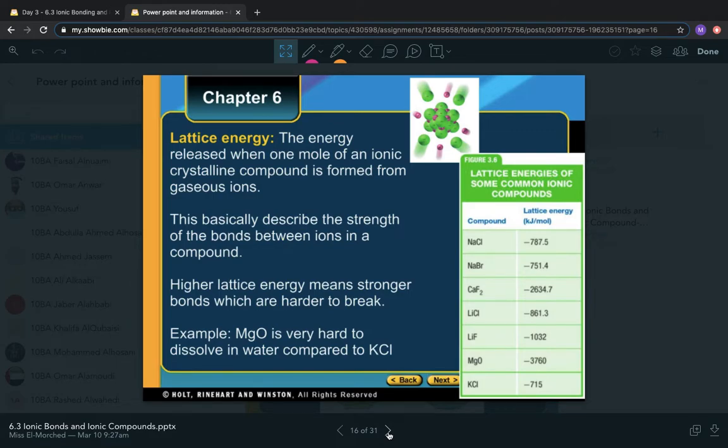The last thing we need to talk about is lattice energy. The lattice energy is the amount of energy that holds all the atoms together inside the crystal lattice. It's the energy released when one mole of an ionic crystalline compound is formed from gaseous ions. If more energy is released upon building the crystal, it means that it's gained more stability.